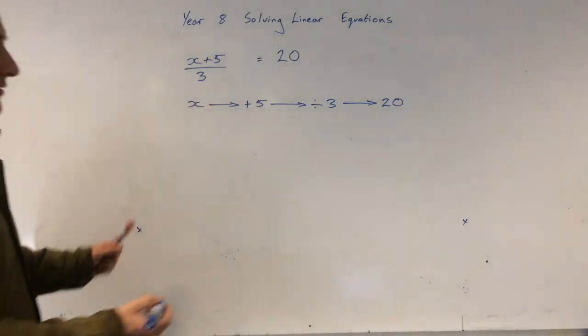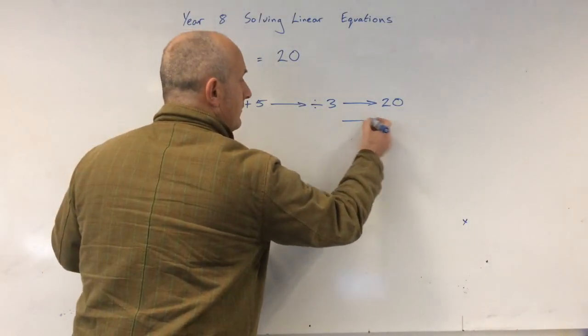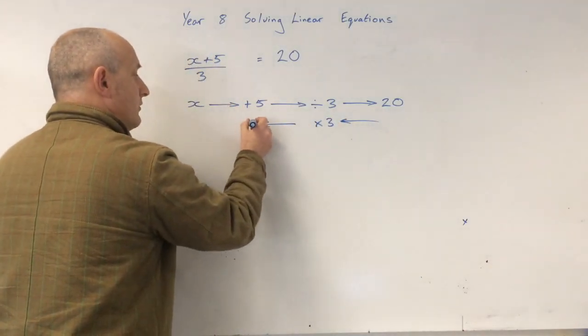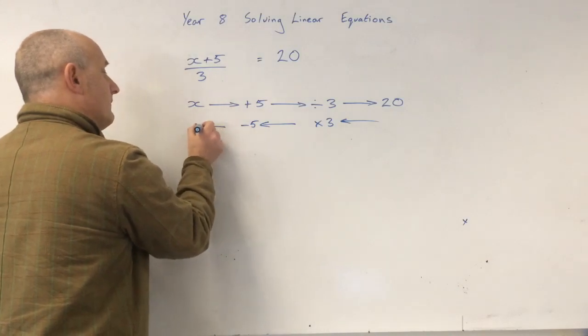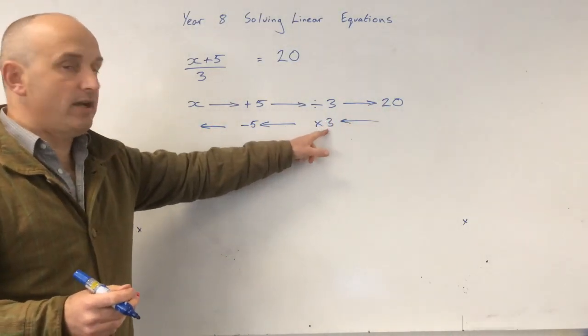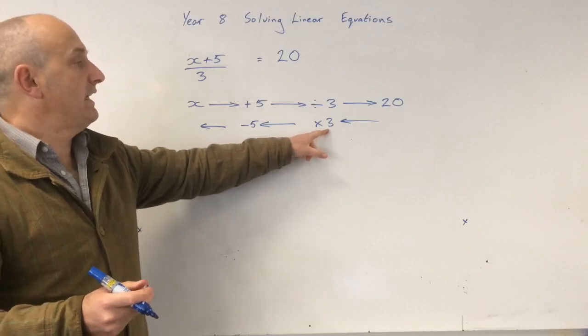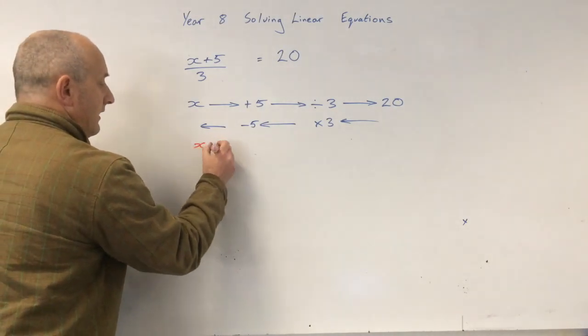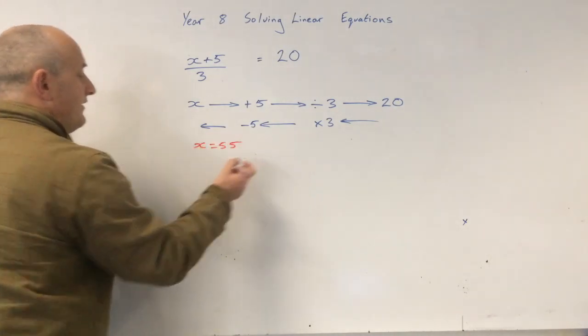So now let's do the reverse. Multiply by 3, subtract 5. Let's do this. 20 multiplied by 3 is 60. Take away 5. x equals 55.